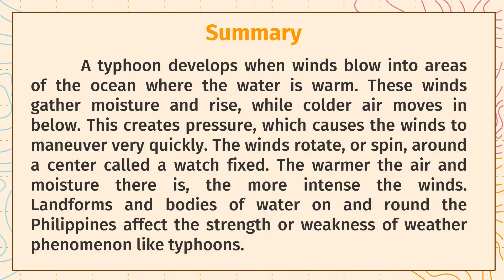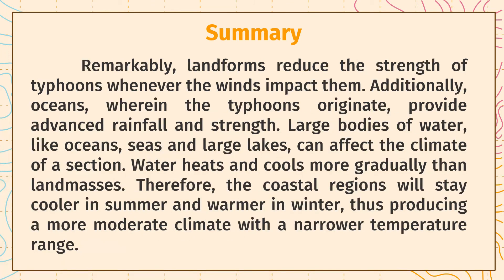Summary: A typhoon develops when winds blow into areas of the ocean where the water is warm. These winds gather moisture and rise, while colder air moves in below, creating pressure which causes the winds to move very quickly. The winds rotate around a center called the eye. The warmer the air and the more moisture there is, the more intense the winds. Landforms and bodies of water around the Philippines affect the strength or weakness of weather phenomena like typhoons. Landforms reduce the strength of typhoons when winds impact them. Oceans, where typhoons originate, provide additional rainfall and strength. Large bodies of water like oceans, seas, and large lakes affect the climate of a region, as water heats and cools more gradually than landmasses, keeping coastal regions cooler in summer and warmer in winter, producing a more moderate climate.